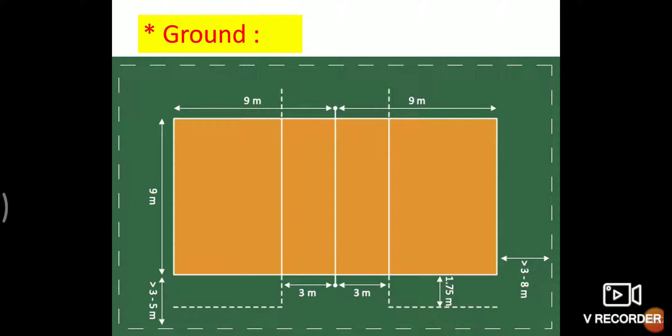Ground: Volleyball ground is 18 meters long and 9 meters wide. The free playing field shall measure a minimum of 7 meters in height from the playing surface. Total length 18 meters, width 9 meters.